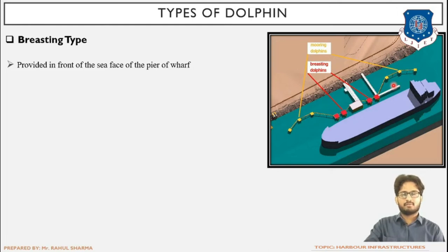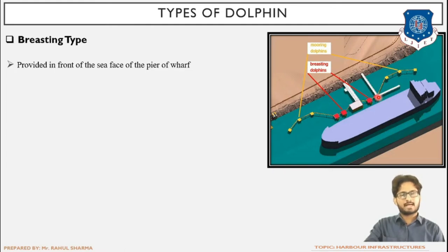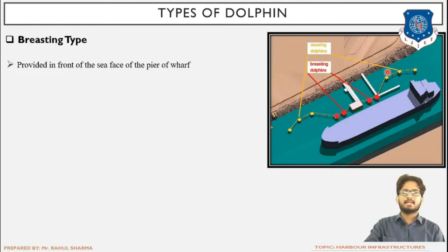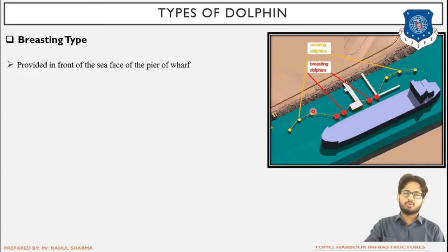So the dimensions of resting dolphins are more as compared to mooring dolphins. The reason being that resting dolphins must sustain impact energy due to coming into contact with the ship, while mooring dolphins do not come into contact with the ship, so their dimensions are less.